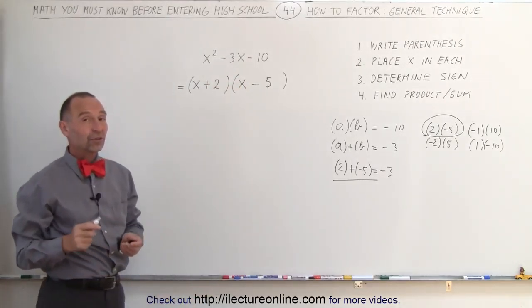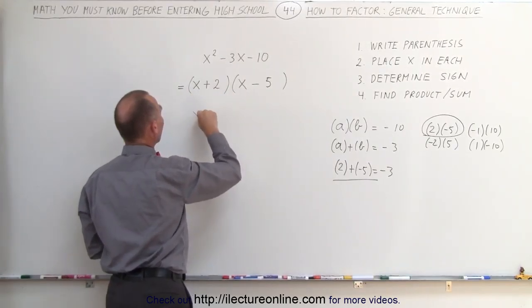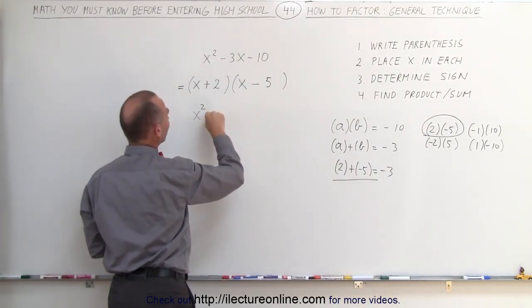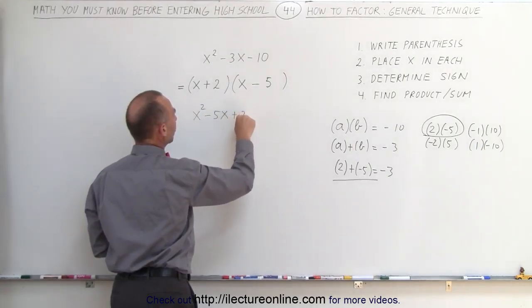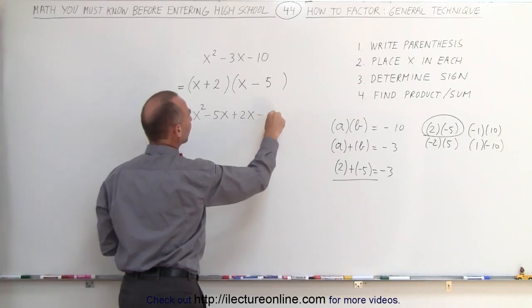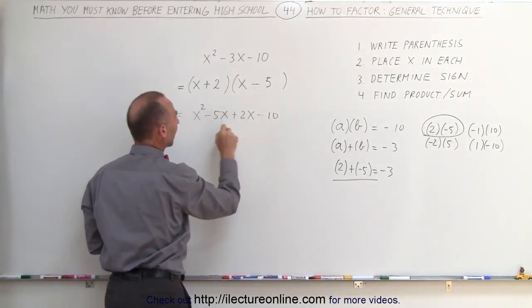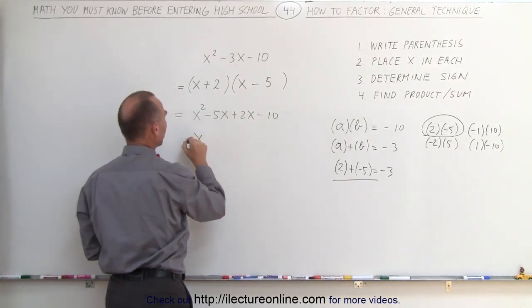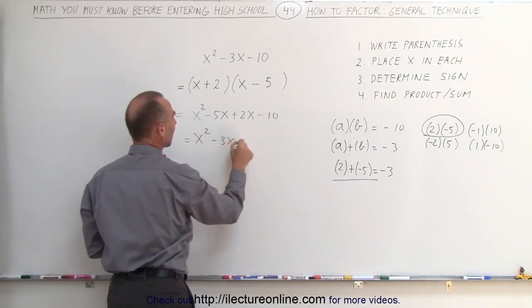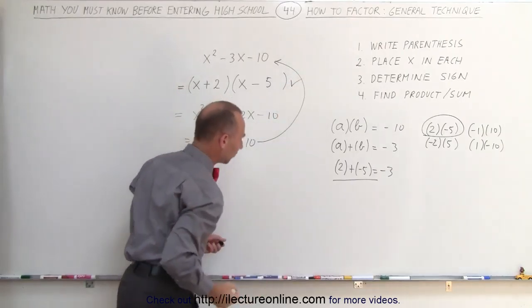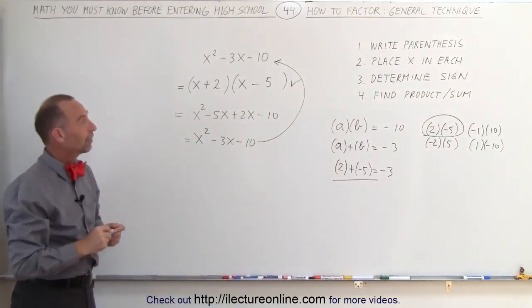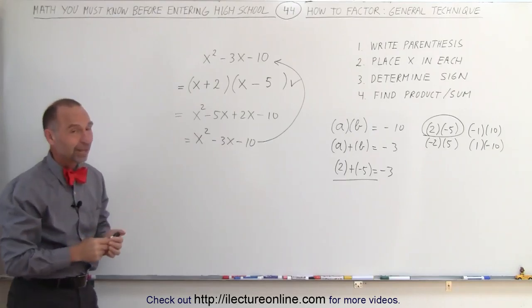Now, you can always check to see if you got the right answer by re-multiplying these out again. So what we can do is multiply this times this, so x times x gives us x squared, x times the negative 5 gives us negative 5x, a 2 times x gives us a plus 2x, and a 2 times the negative 5 gives us a minus 10. If you then add the like terms together, you get x squared, minus 3x, minus 10, which is again what we started with up there, which means that this is the correct factored form of that particular trinomial, and that's how you do that.